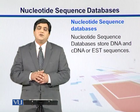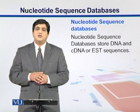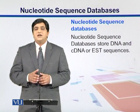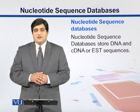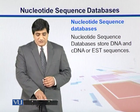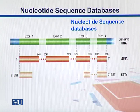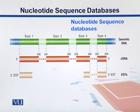Nucleotide sequence databases are the types of biological databases which store nucleotide sequence data, which can be cDNA, EST, or DNA. Here we have a diagram showing genomic DNA with different exons. In eukaryotes we have exons and introns. Exons get transcribed into messenger RNA, and we can get cDNA from that messenger RNA through reverse transcription, which can then be stored in our databases.